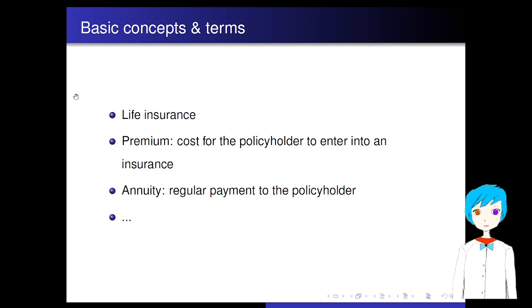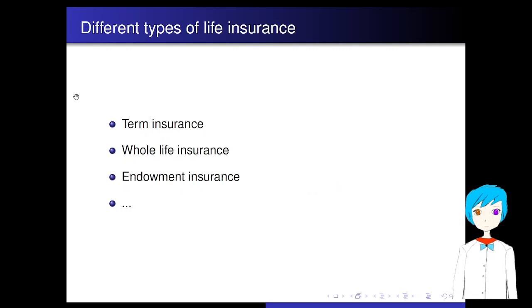Of course, there are other important terms that we'll be using throughout this quarter, which we will introduce when we use them. There are different types of life insurance, like term insurance, which insures against the life's death in a predetermined period of time. Whole life insurance, which covers the whole life of the person to be insured. The endowment insurance, which pays a lump sum of money either at the death of the life or at the end of a predetermined period, whichever comes first.